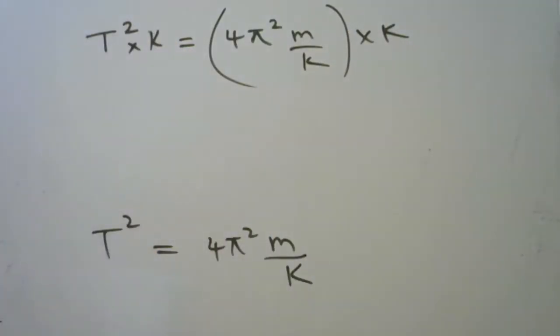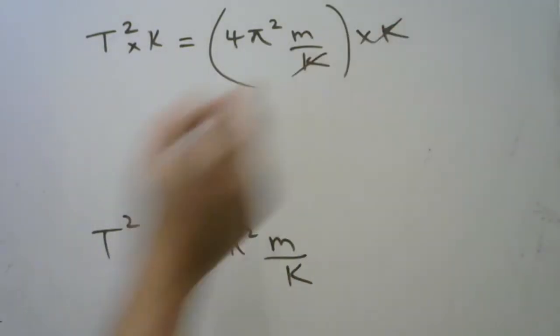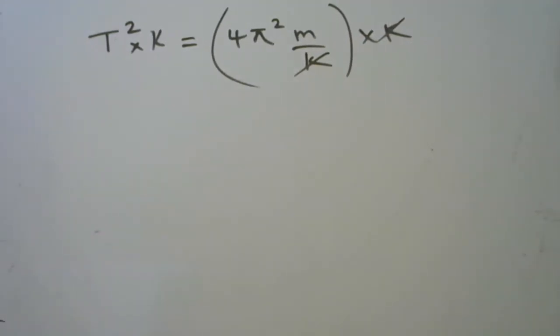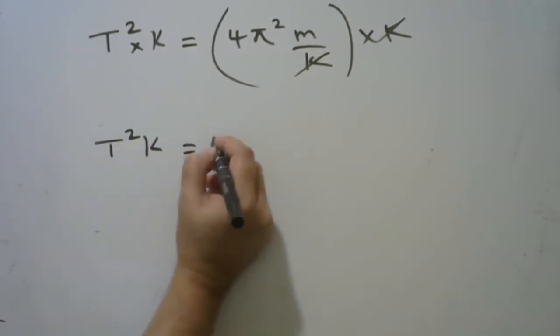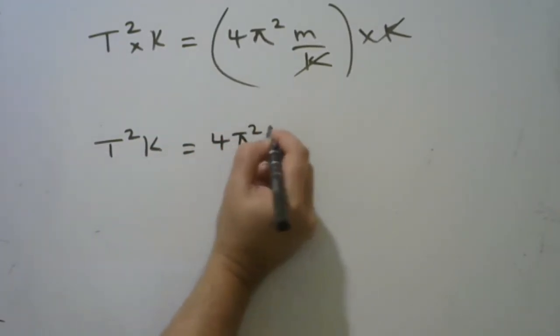This cancels with this, and we have now T squared k is equal to 4π squared m.